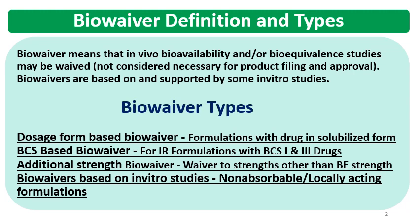Biowaivers are based mainly on some in vitro studies. The examples of biowaiver types are given by the regulatory authorities. They are mainly 4 types. First is dosage form-based biowaiver, in which the formulations contain the drug in solubilized form — like solution or other forms where the drug is present in solubilized form. These dosage forms will get a biowaiver.